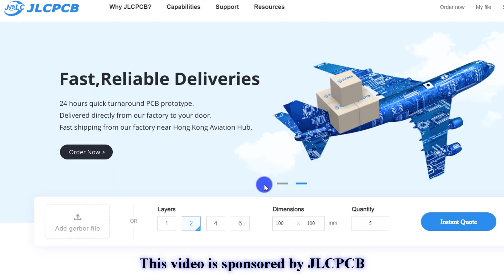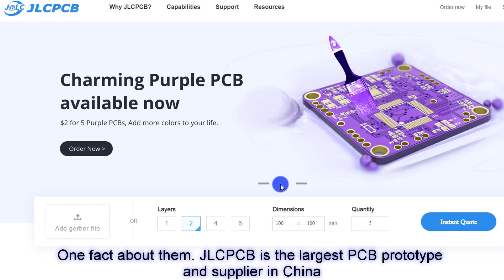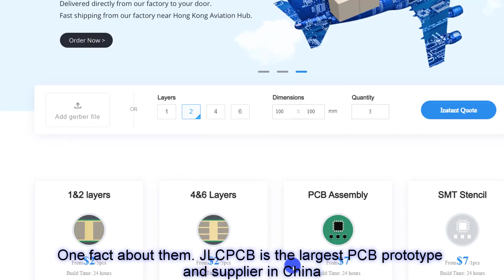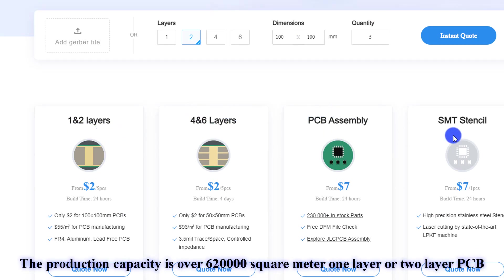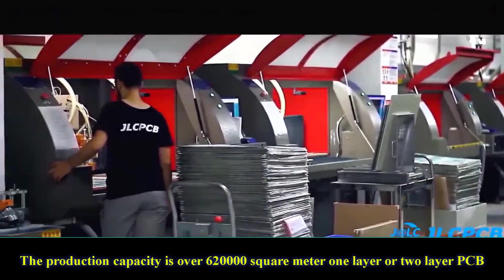This video is sponsored by JLCPCB. One fact about them, JLCPCB is the largest PCB prototype and supplier in China. With over 20,000 online orders per day, the production capacity is over 620,000 square meter one layer or two layers PCB.